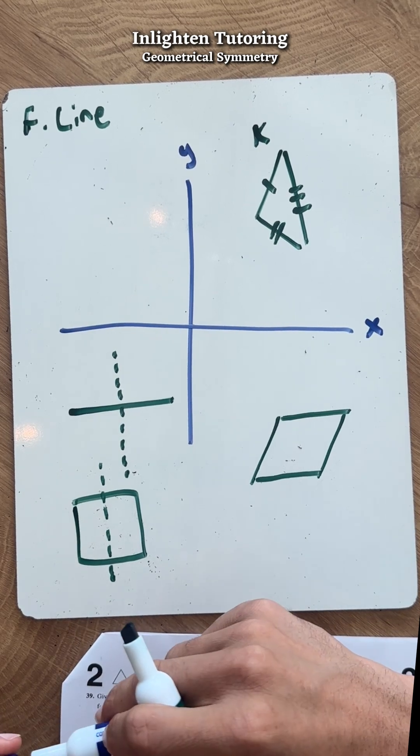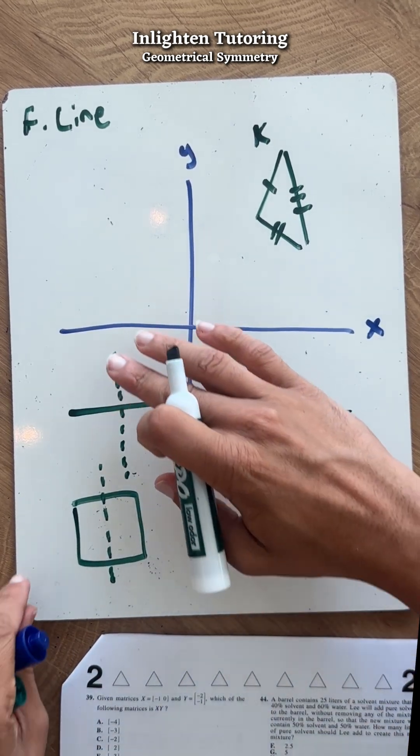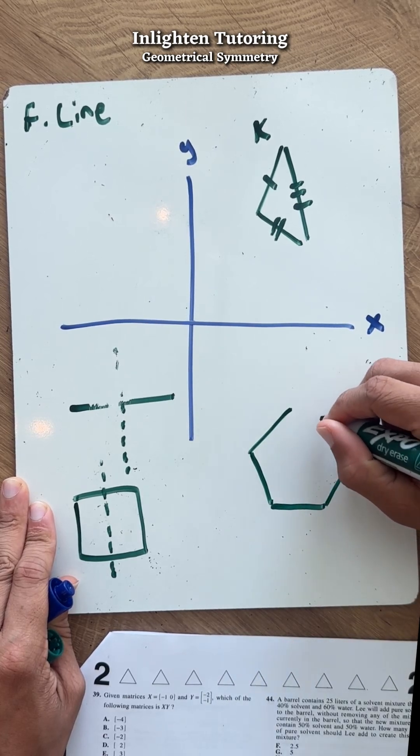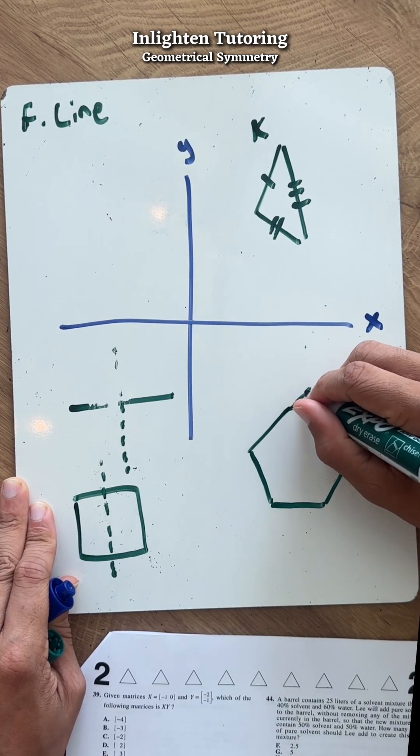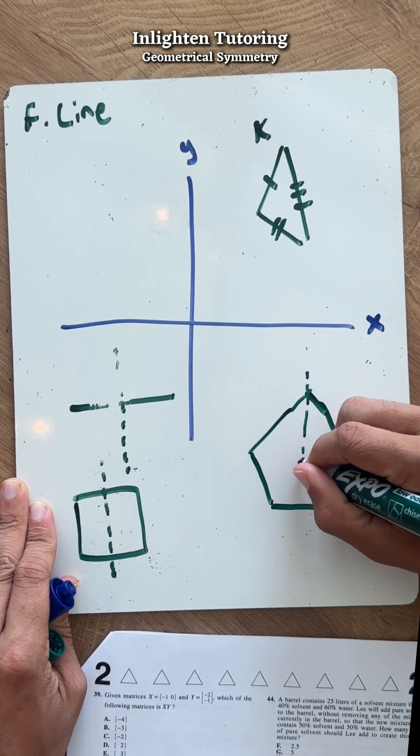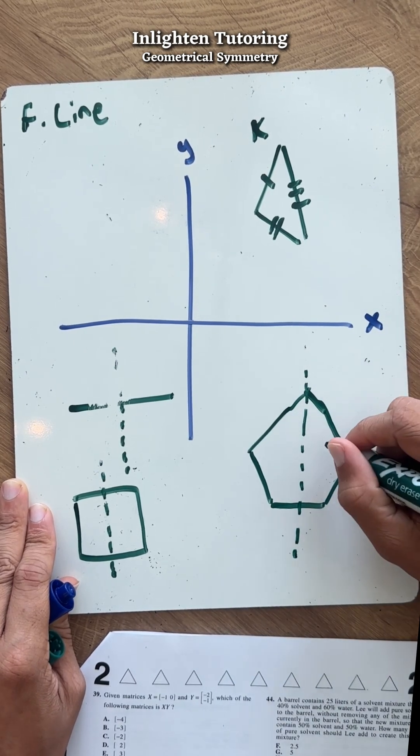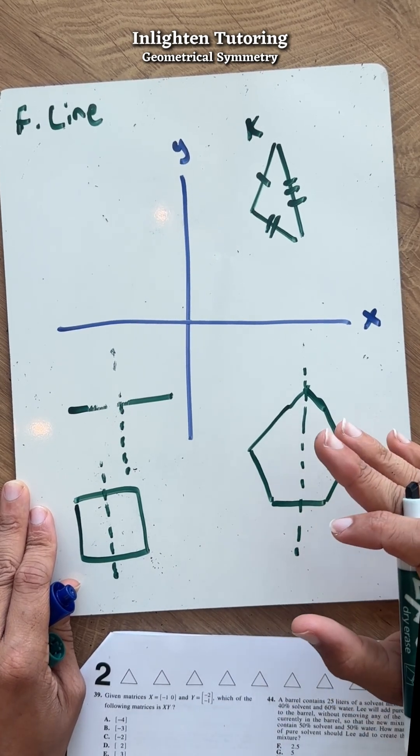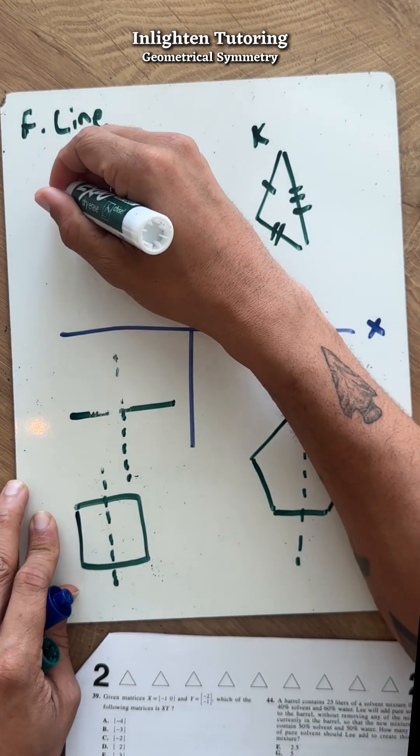A pentagon is going to look a little something like this - a little starfish design, right? If you cut this over a line of symmetry, yes it works. Now a parallelogram is kind of tricky.